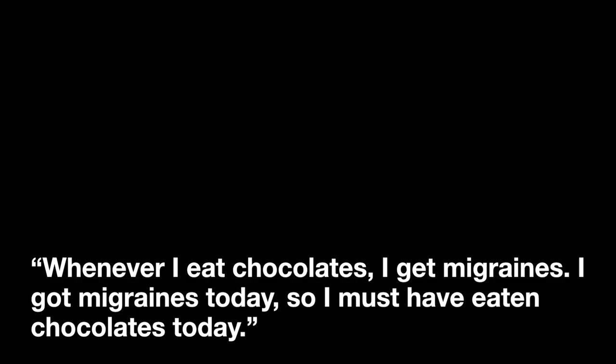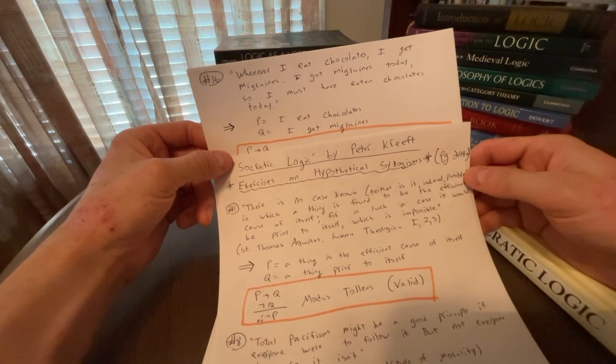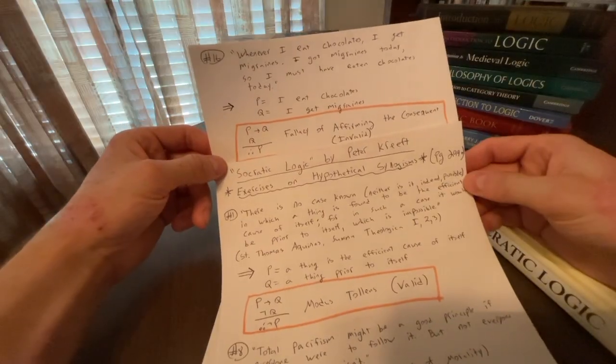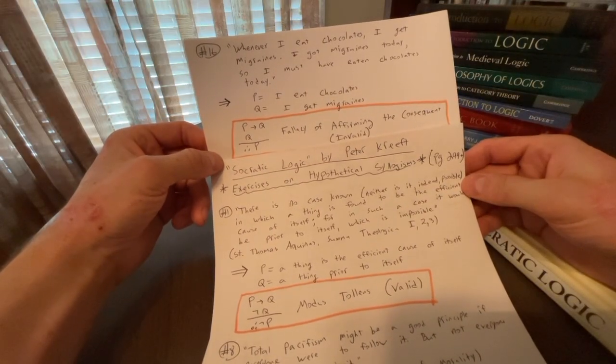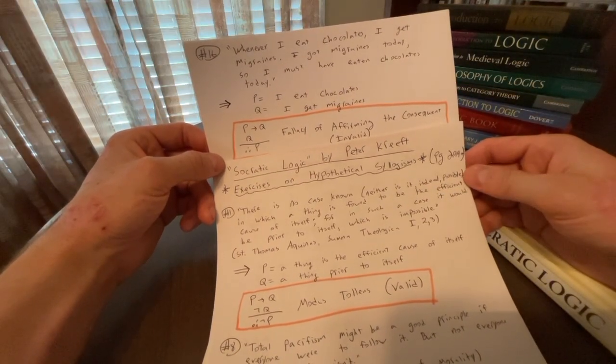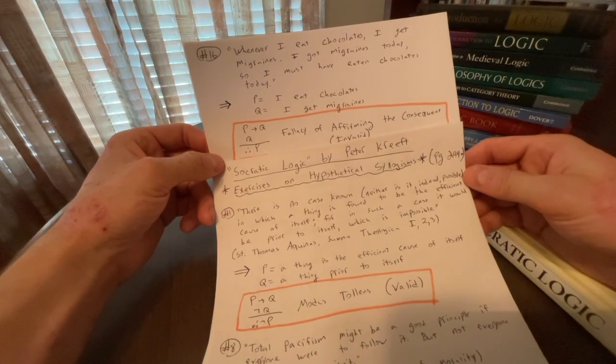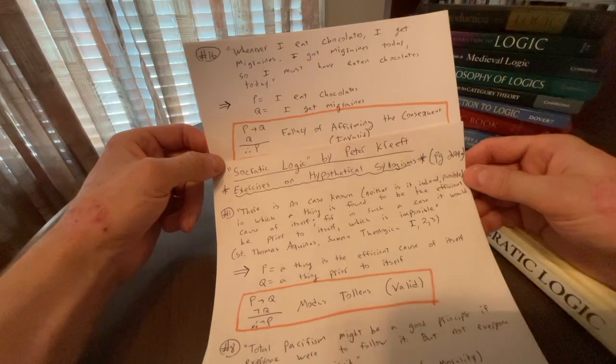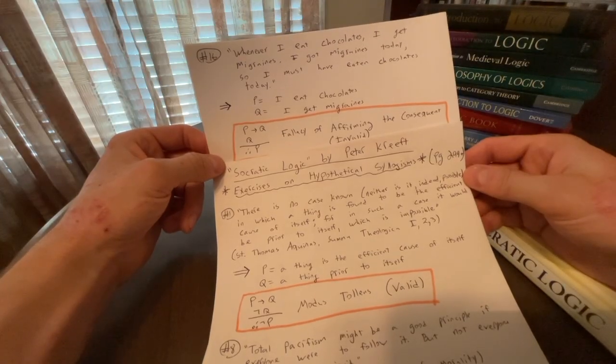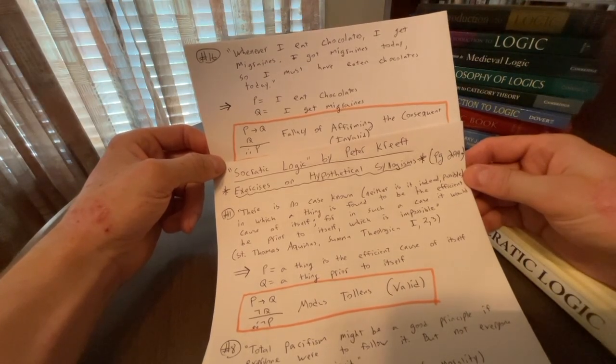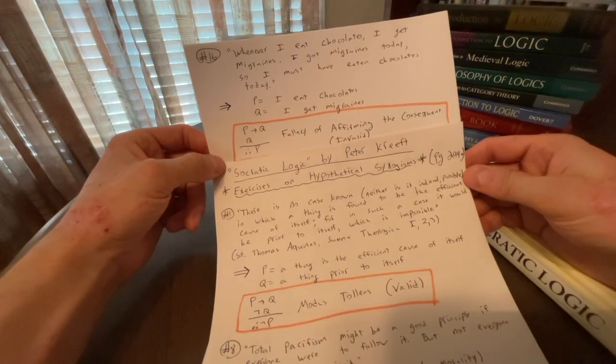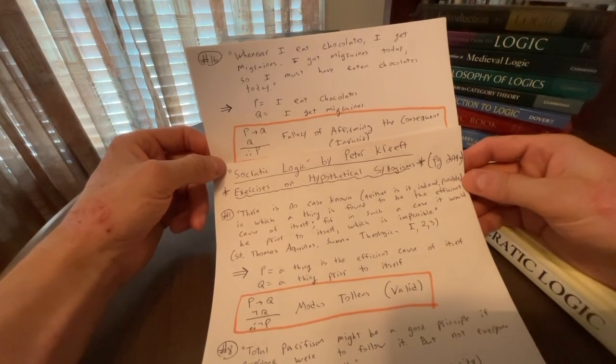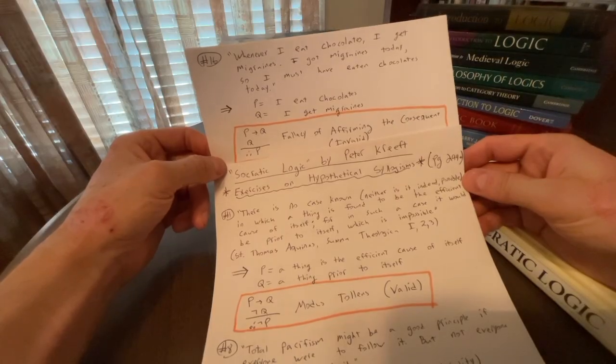So we can say that P is I eat chocolates. Q, we can say I get migraines. So we get the argument, if P, then Q, Q, therefore P. But again, we have something that's invalid. We have the fallacy of affirming the consequent. So if I eat chocolates, then I get migraines. I'm getting migraines, therefore I eat chocolate? No. P, I eat chocolates, is sufficient, but not necessary to get those migraines. So we have an invalid argument because we're confusing sufficient and necessary conditions.